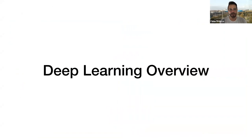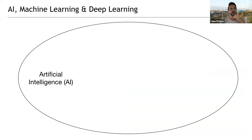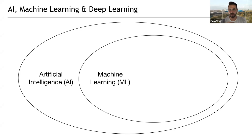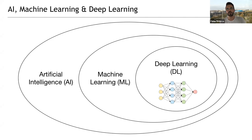Before we get into the implementation, we need a little introduction about deep learning so we're all on the same page. Artificial intelligence is a very broad definition that encompasses a lot of things. Machine learning is a subset of artificial intelligence, and deep learning is a subset of machine learning — essentially deep learning is a synonym for neural networks, all those connected dots.